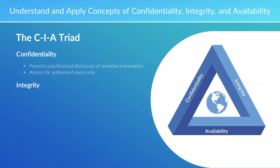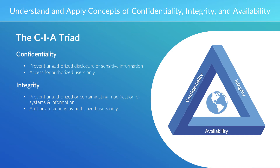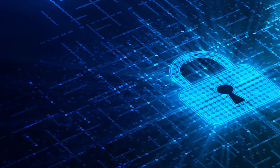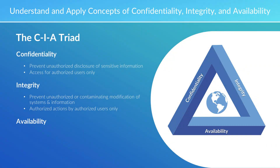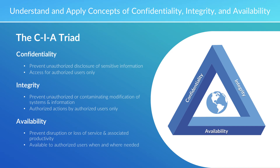Integrity highlights the basic topic of information trustworthiness. We want to prevent unauthorized or contaminating modifications of systems and information, and ensure that only authorized actions by authorized users are taken, so that our information remains trustworthy. Our third leg of the iron triangle is availability — we want to prevent disruption or loss of service and associated productivity, ensuring that information with its integrity intact and its confidentiality is available to authorized users when and where needed.